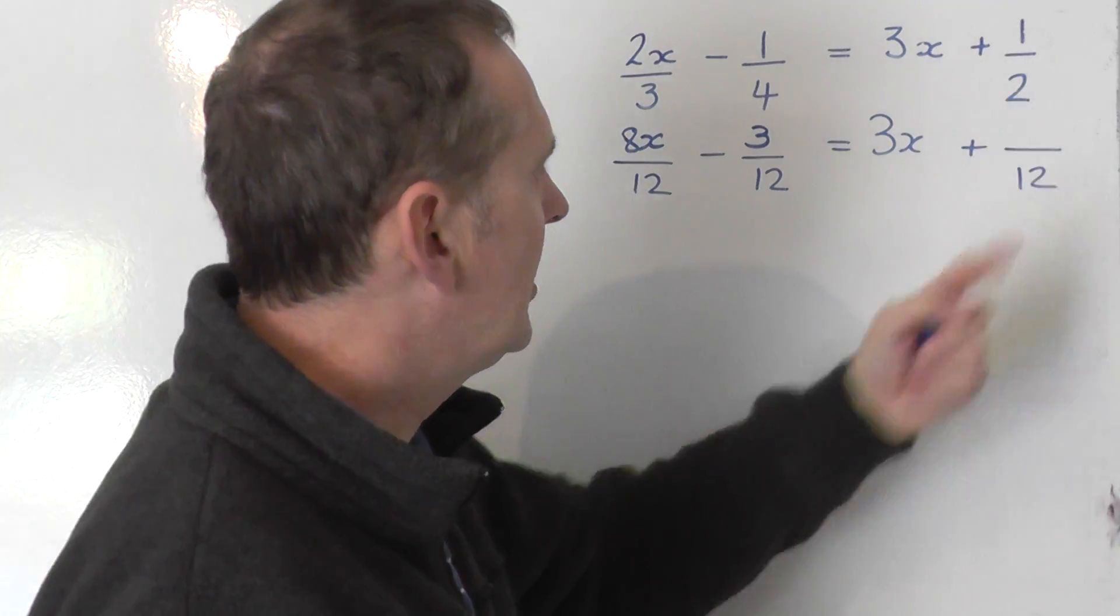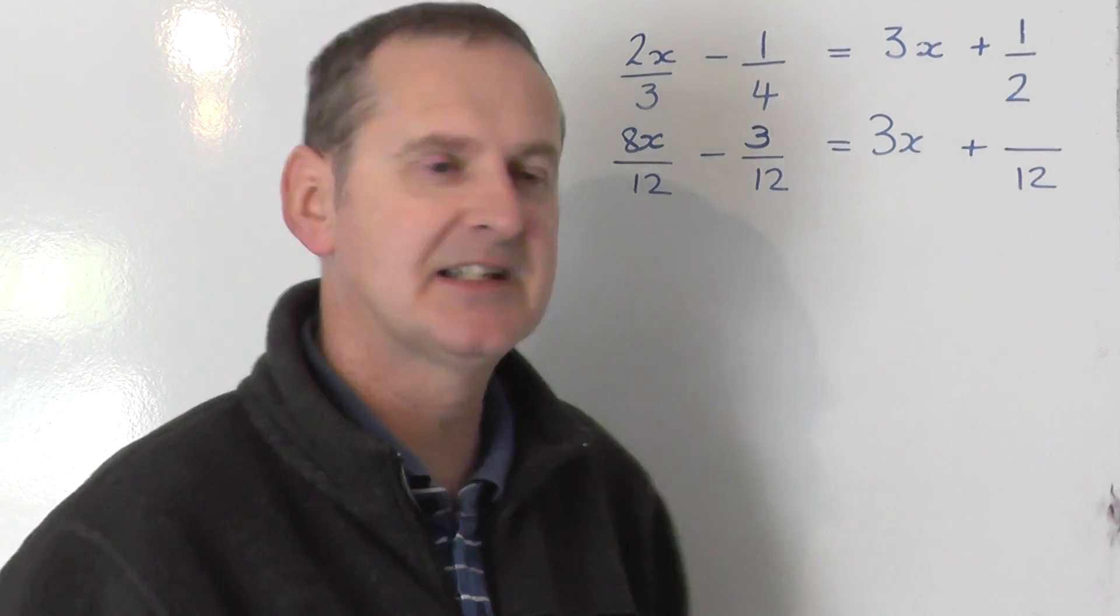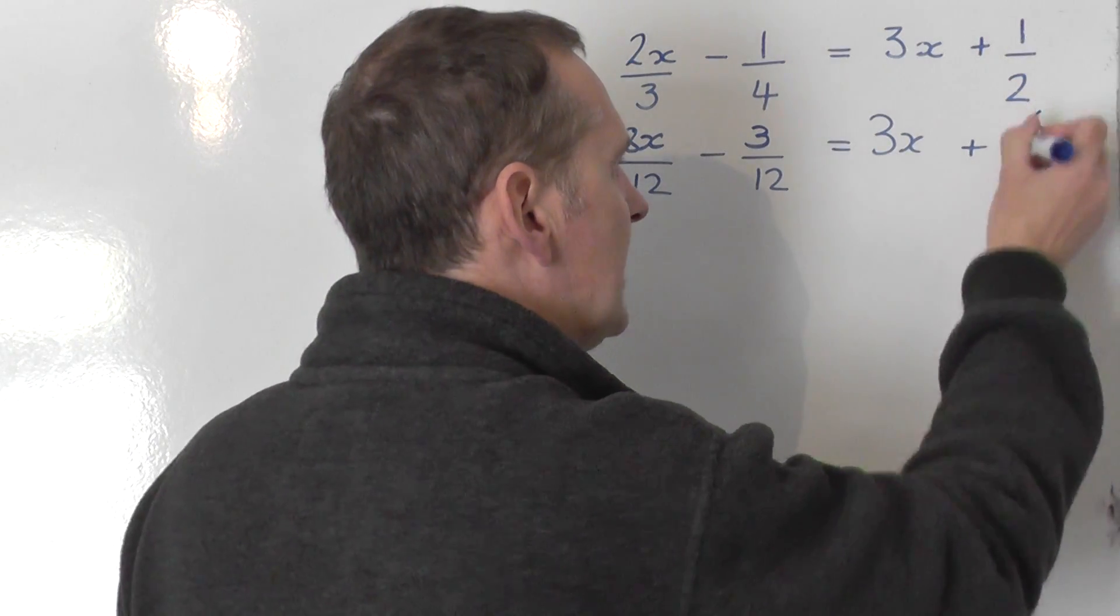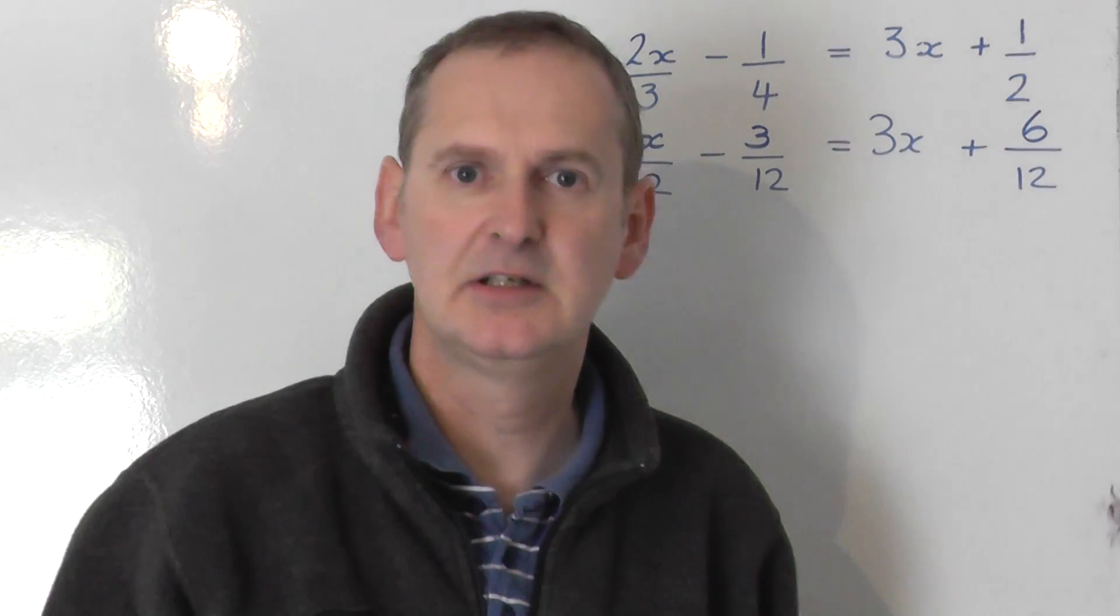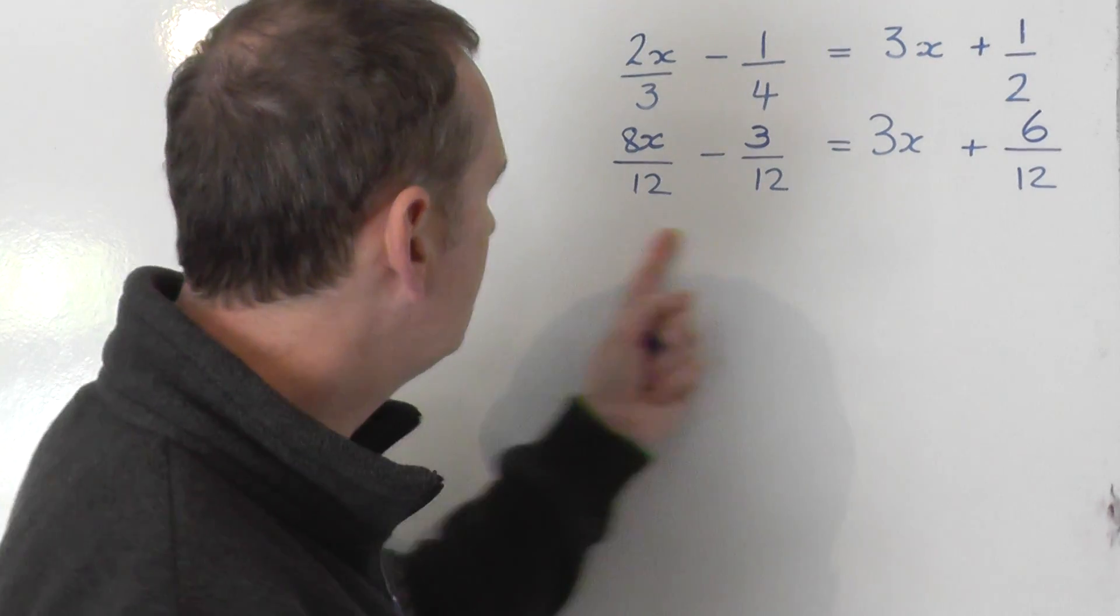The 2 needs to get changed into 12. So I need to multiply the 2 by 6 to get 12. So do the same thing to the top. Times that by 6 to get 6. 1 times 6 is 6. So we end up with this.